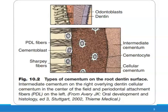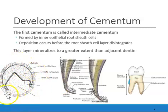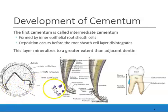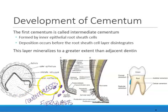The cementum that they're making has been formed by the inner epithelial root sheath. What happens later is that the follicle — the dental follicle — has cells all around it, and these cells come from the dental follicle. These cells can either become cementoblasts or fibroblasts. Cementoblasts will make additional cementum, and fibroblasts will make the fibers — the periodontal ligament fibers.